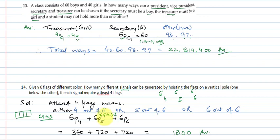That equals 720. 6P6 into 1 will also give the same answer, 720. So the result is 1800. So there are that many ways of making a signal in which at least four flags are there.